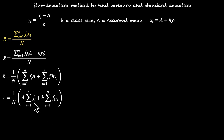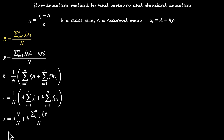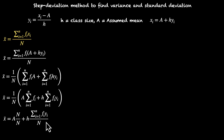So this becomes mean = (1/n) × [a × Σfi + h × Σ(fi·yi)]. Now Σfi is the sum of all frequencies, which equals n. So this becomes mean = (a·n/n) + h × Σ(fi·yi)/n. In the numerator we have Σ(fi·yi) — the sum of the product of frequencies with their corresponding yi — and denominator has n. This means we have ȳ here, so x̄ = a + h·ȳ.